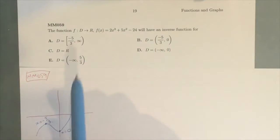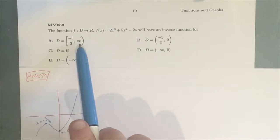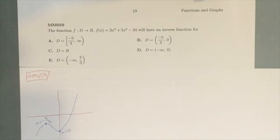So we've got a bunch of options, and you can see that they all have -5/3 or infinity, apart from R and D. So basically the question is, why would this function not have an inverse?